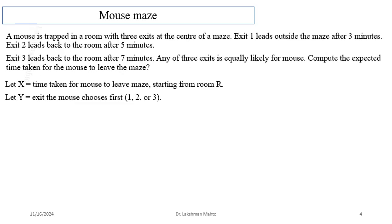Now another interesting problem — the mouse maze. There is a mouse trapped in a room with three exits. Exit one leads outside the maze after 3 minutes. Exit two leads back to the room after 5 minutes. Exit three leads back to the room after 7 minutes. Each exit is equally likely. Find the expected time taken for the mouse to leave the maze.